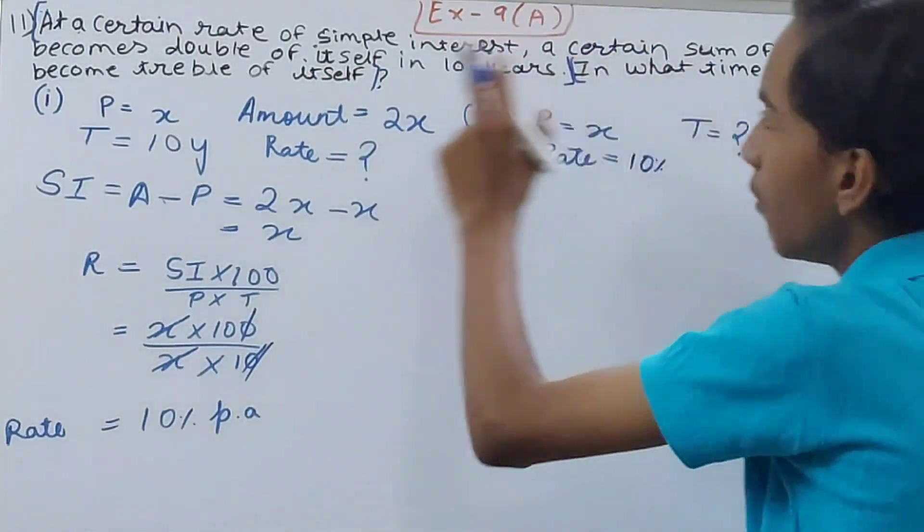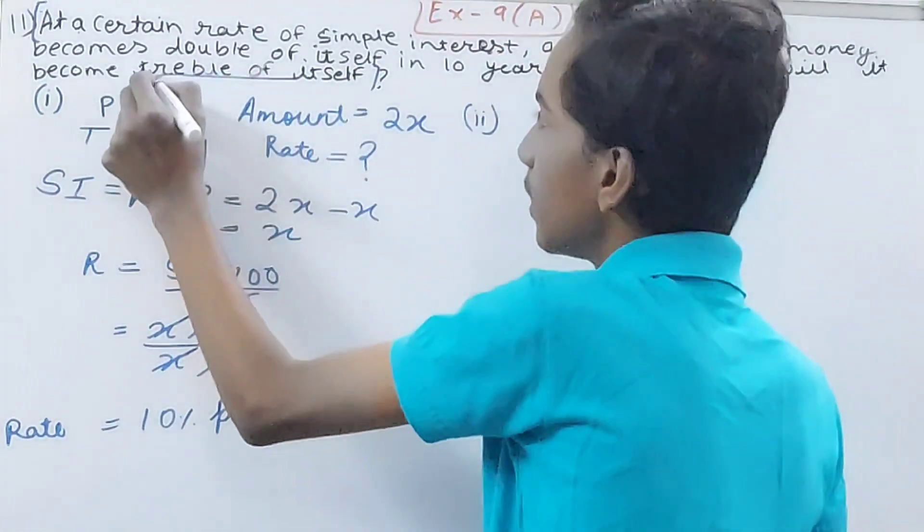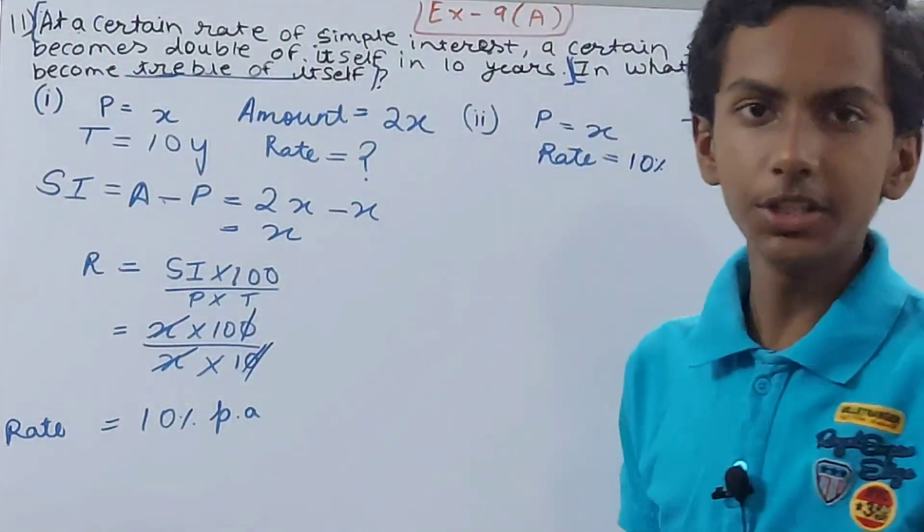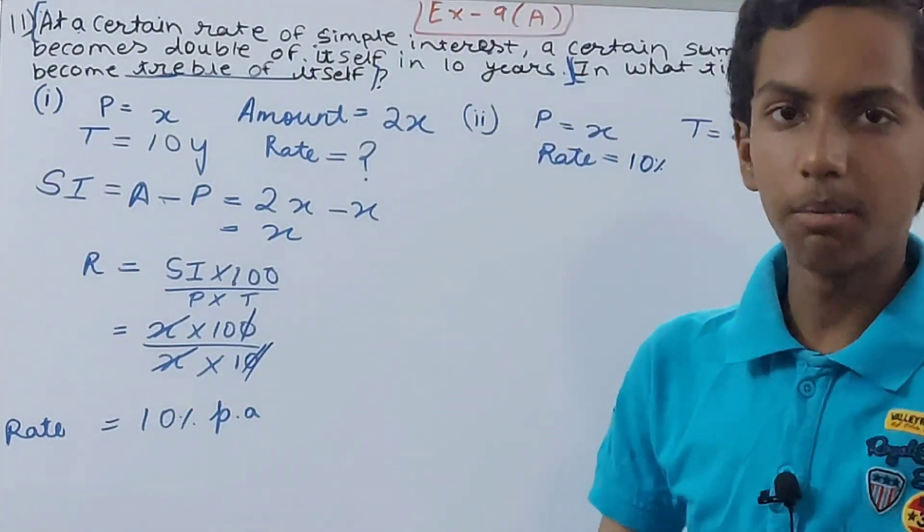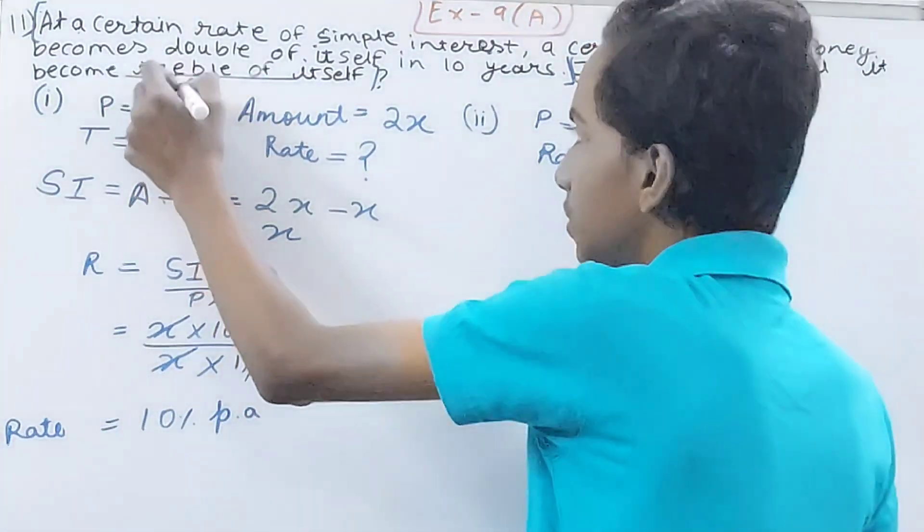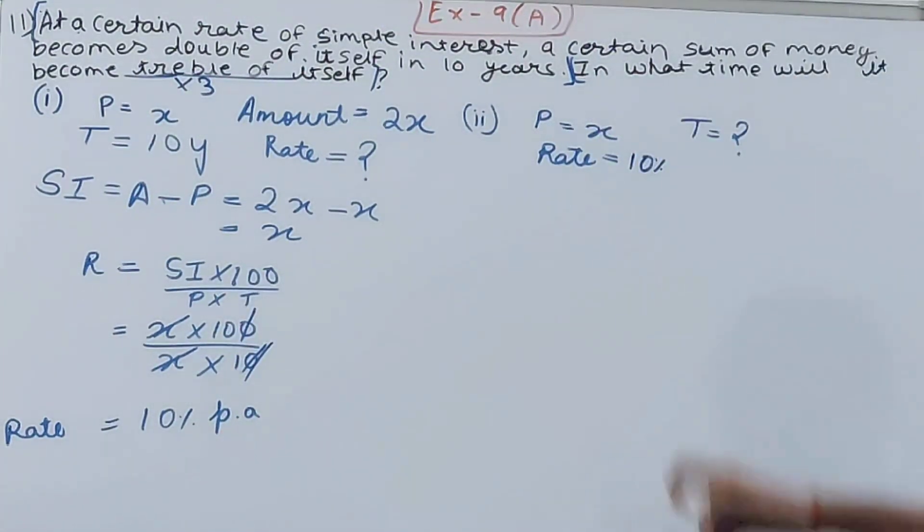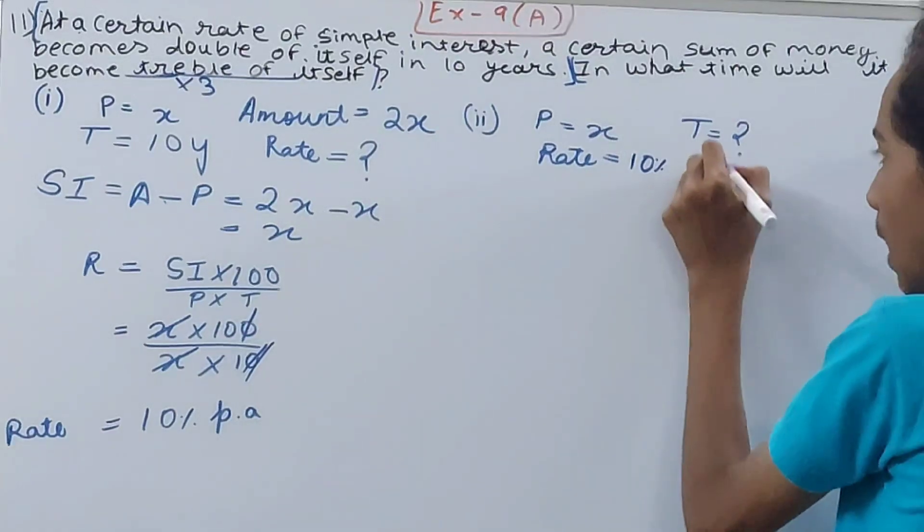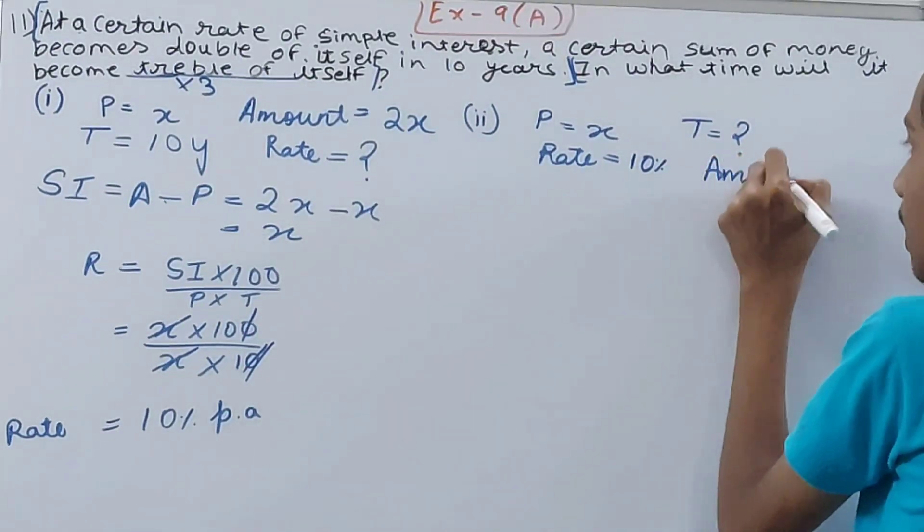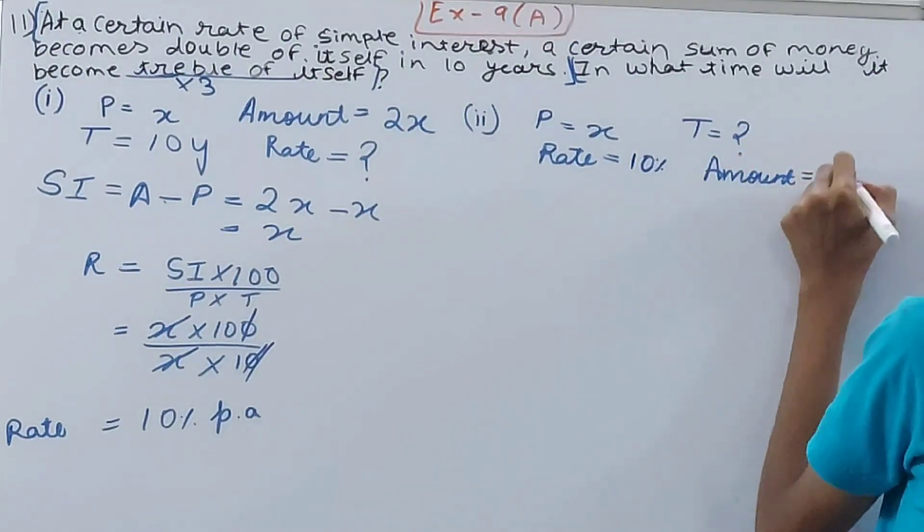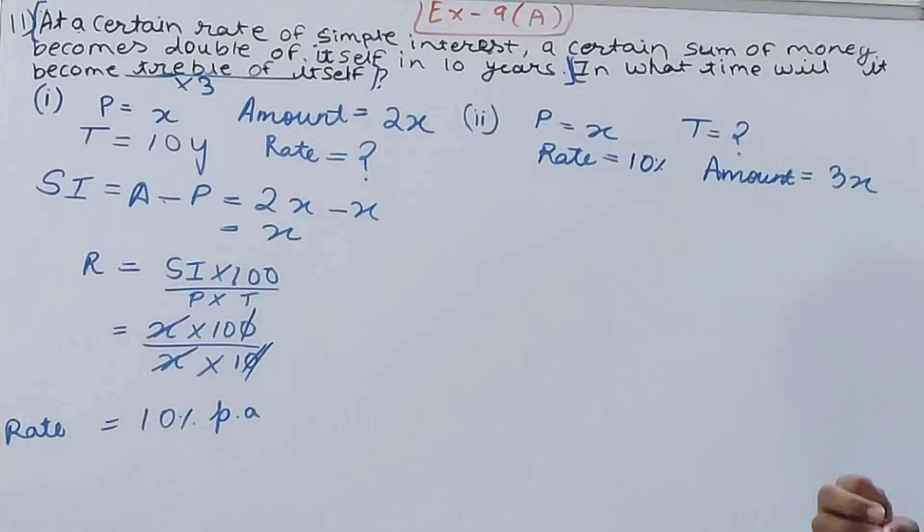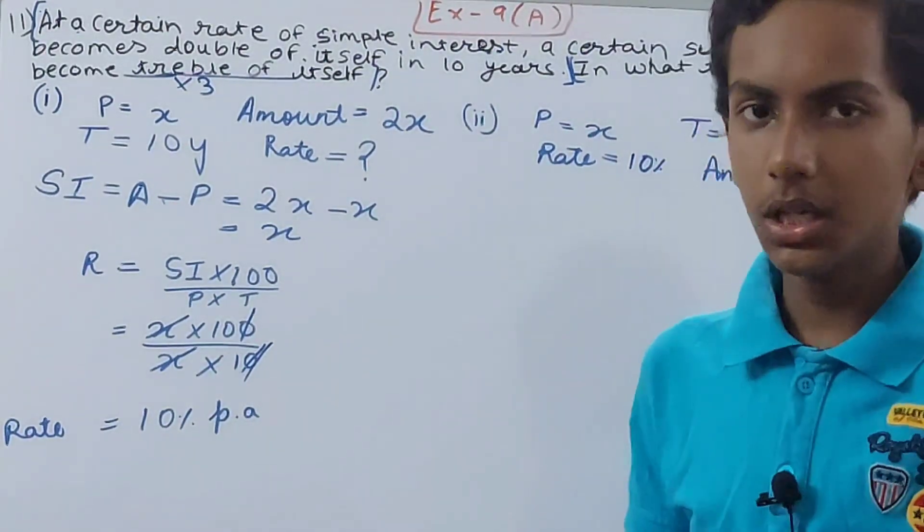Next we need to know what's given here. In what time will it become treble of itself? What does treble of itself mean? It means that multiply the number by 3, thrice of itself, into 3. That's what treble means. So if I have x, then my amount will become what? 3x, because we'll treble it, so we'll multiply x by 3.